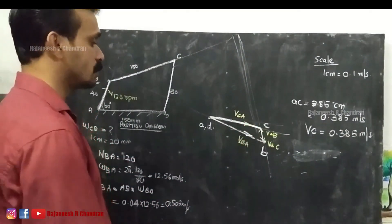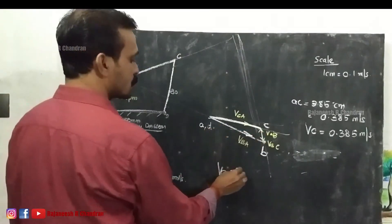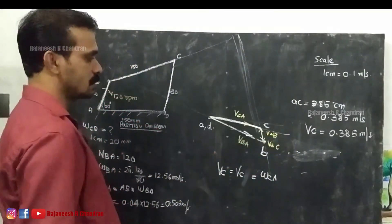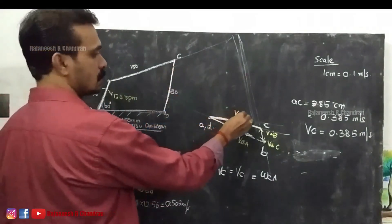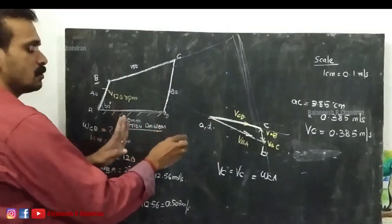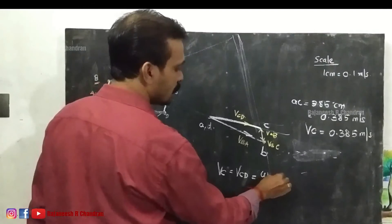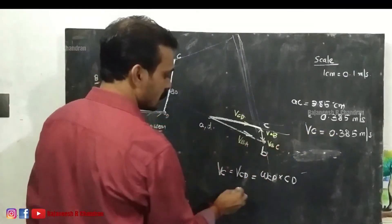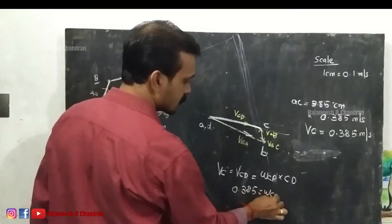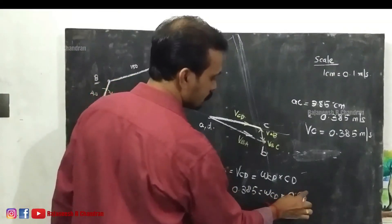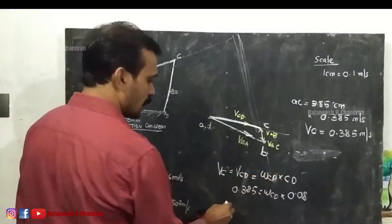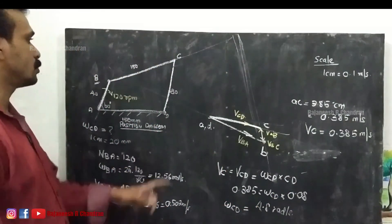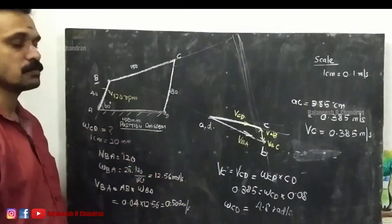Now we calculate the angular velocity omega_CD. Velocity of C with respect to D equals omega_CD multiplied by CD. So 0.385 = omega_CD × 0.08. On calculating, omega_CD = 4.8 radians per second. The magnitude of the angular velocity of link CD with respect to D is 4.8 radians per second.